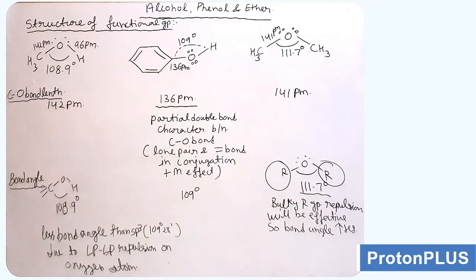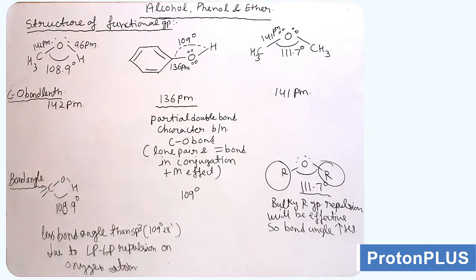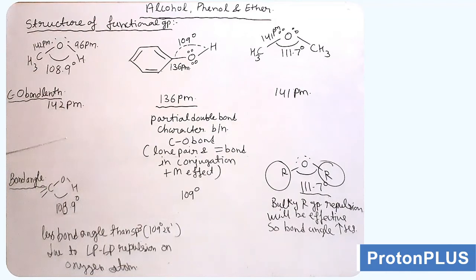Next, we will move to ether. The bond angle in ether is maximum, at 111.7 degrees. The reason is that the two lone pairs on oxygen are not effective for LPLP repulsion here. Instead, there is much more effective repulsion between the two R groups — the two bulky methyl groups repel each other due to steric hindrance, pushing apart and resulting in an increased bond angle in ether.